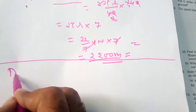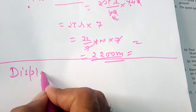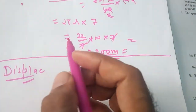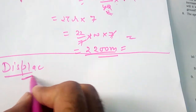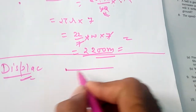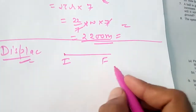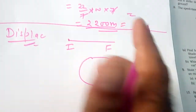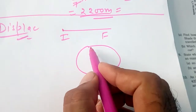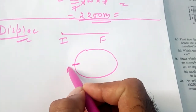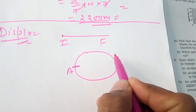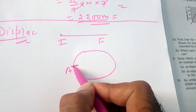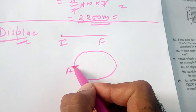Now we have to find displacement. Displacement means the distance from initial point to final point. This is a circle and 1 round is covered in 40 seconds. If a person starts from point A, then after 40 seconds they come back to the same point. We have to find displacement at 140 seconds.